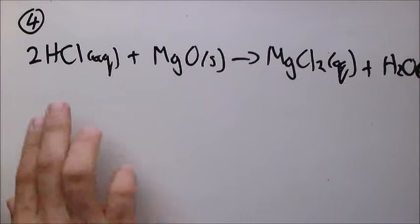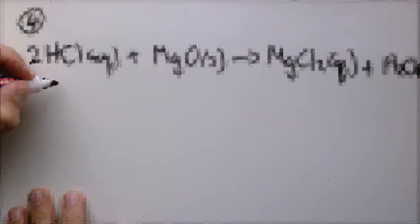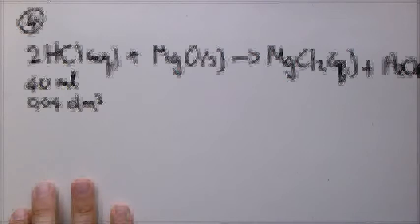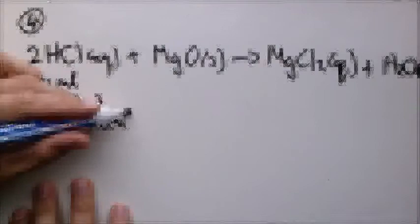For the acid, the volume was given as 40 milliliters, which is the same as 40 cubic centimeters, which equals 0.04 cubic decimeters. We also know the concentration of this acid was 0.25 moles per cubic decimeter. That is the information given about the acid.